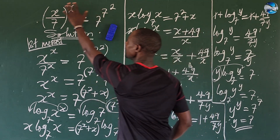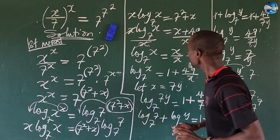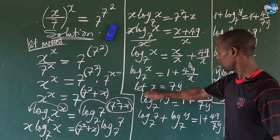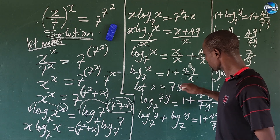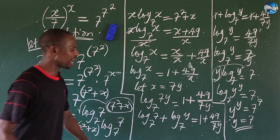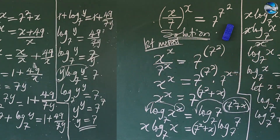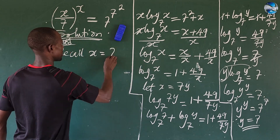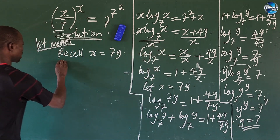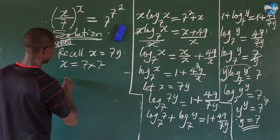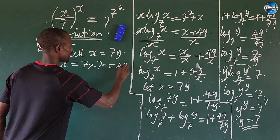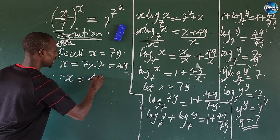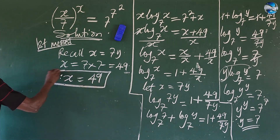Now, recall that at the beginning we don't have y in our system. So we recall where we said let x be equal to 7y. So let's get the value of our x. Recall that we said let x be equal to 7y, and we solved y to be 7 already. Therefore x is equal to 7 times 7. And 7 times 7 is equal to 49 — we all know that from our elementary mathematics. So therefore our x is equal to 49.